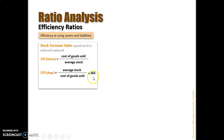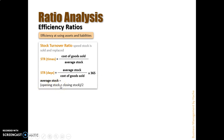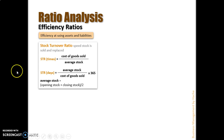The average stock is calculated from the opening stock — how much in value you had when the year started — plus the closing stock, how much you hold at the end of the accounting year. The closing stock is shown in the balance sheet, and the opening stock comes from the previous balance sheet. The cash flow statement also shows those values. You add opening and closing stock, divide by two, and get the average stock for these calculations.